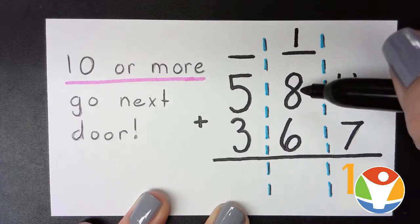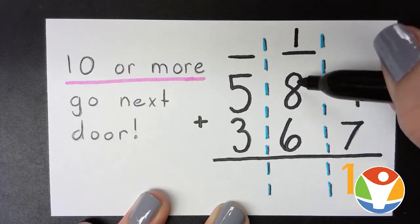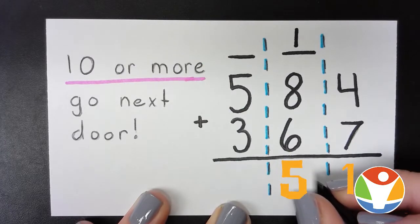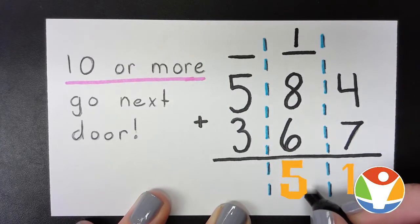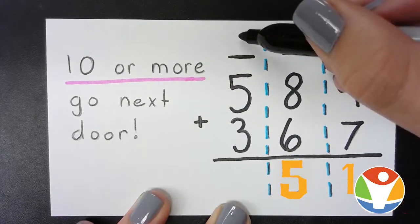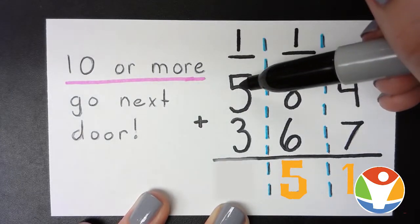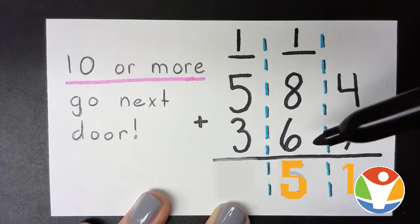So now we add one plus eight plus six. That will give us 15, so we put our ones place right here and we take the one next door. Now we add one plus five plus three.